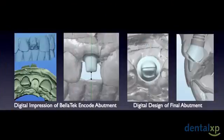We can see in these images the digital scan of the ENCODE abutment and our final design depicted of the tissues in all the different positions. This will give us an ideal position when we place our final abutment. Remember, we only take the ENCODE abutment out of the mouth one time, and that will minimize any change to the tissue.